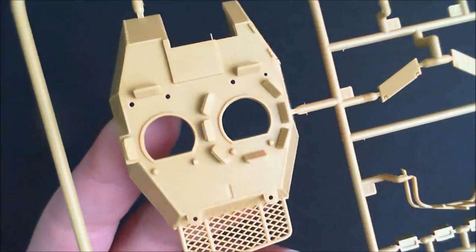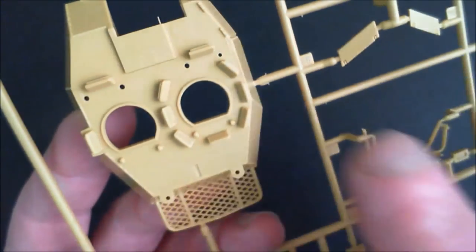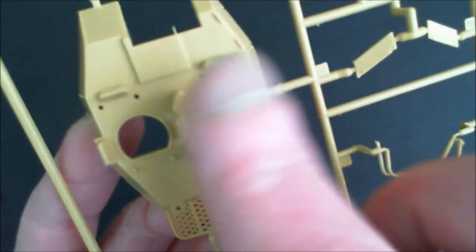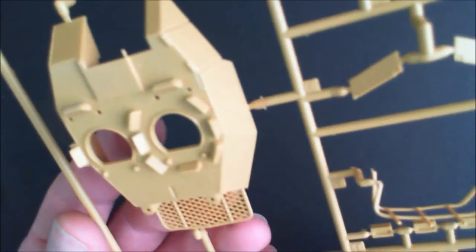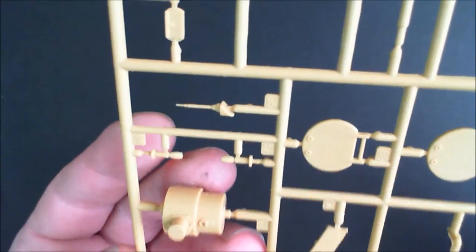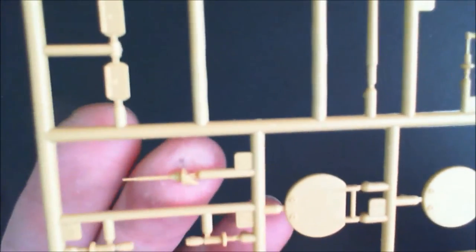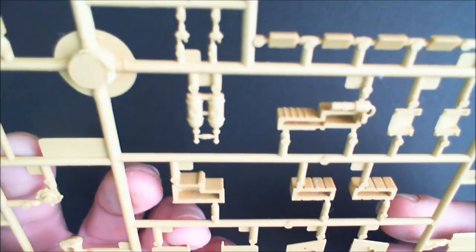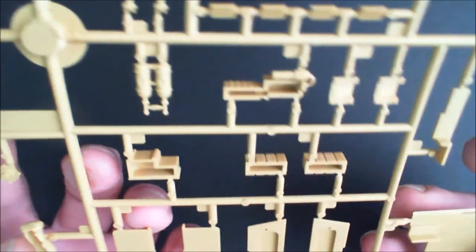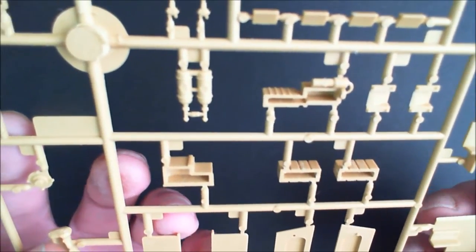Very nicely molded, very nicely molded indeed. You've got the vision blocks or whatever pre-molded onto it. Some people like that, some people don't. It doesn't bother me in the slightest. You've got the mantlet for the Bushmaster, what appears to be a little machine gun there. When it comes to flash and ejector pin marks and things like that, there's very few of both. Tiny little bits of flash here and there, but nothing that can't be scraped away. A bit of sanding and cleaning. So that's the three sprues. They're quite nice.